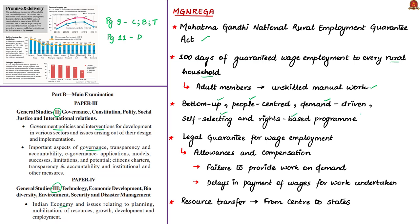This program provides a legal guarantee for wage employment by providing allowances and compensation both in cases of failure to provide work on demand and also delays in payment of wages for work undertaken by MGNREGA workers. So if MGNREGA workers demand jobs and their payments are delayed once their job is over, they can demand allowances and compensation. MGNREGA is a demand-driven wage employment program, and resource transfer from the centre to states is based on the demand for employment in each state.